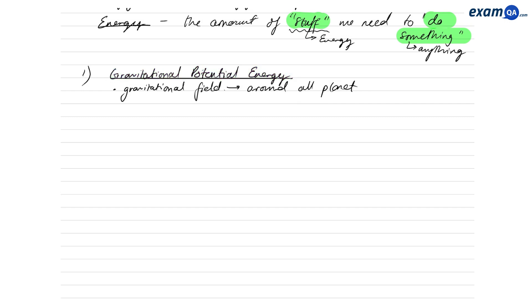For example, we are objects with some mass, so we have gravitational potential energy because we are near the Earth. The way we understand it is: the higher up something is, the more gravitational potential energy — GPE — it has.